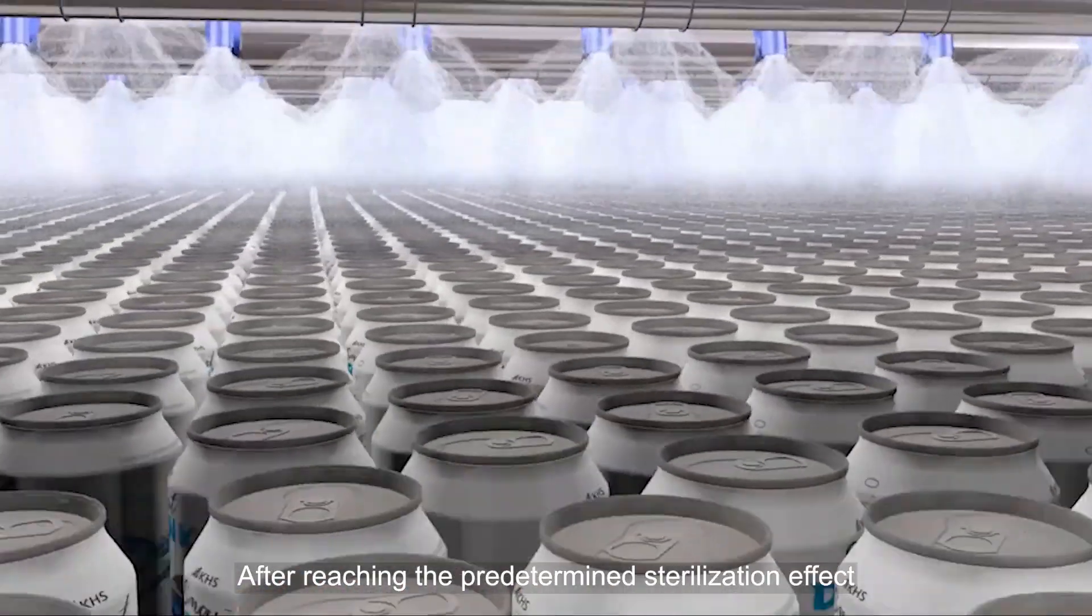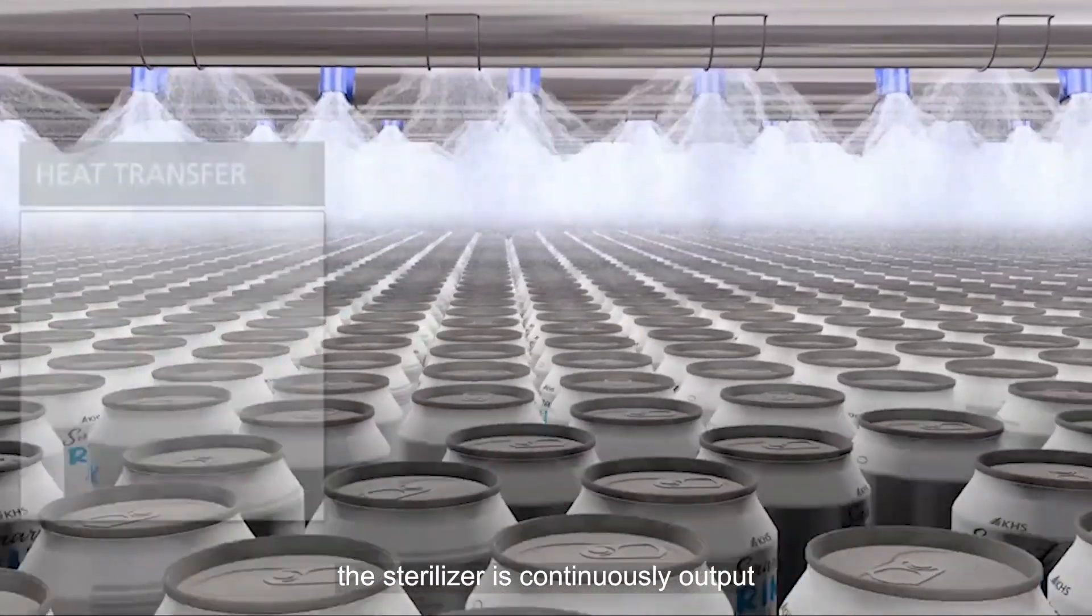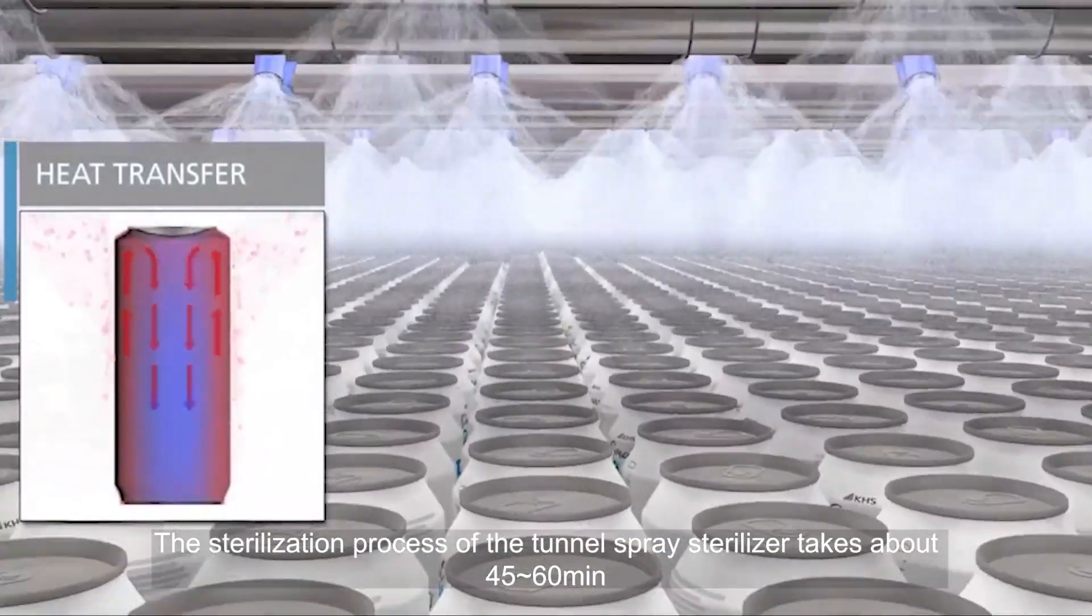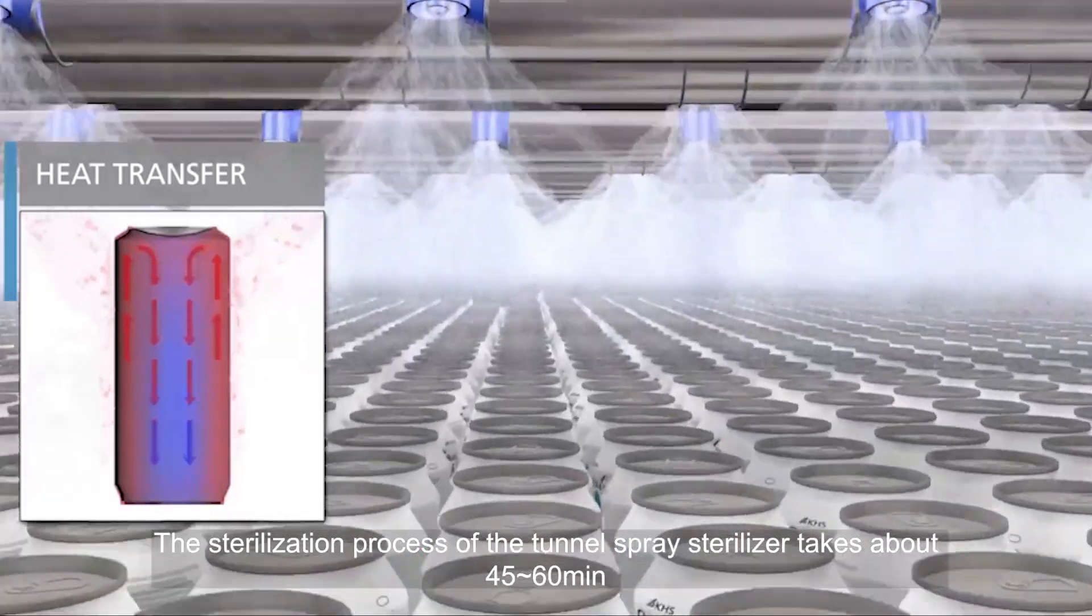After reaching the predetermined sterilization effect, the sterilizer is continuously output. The sterilization process of the tunnel spray sterilizer takes about 45 to 60 minutes.